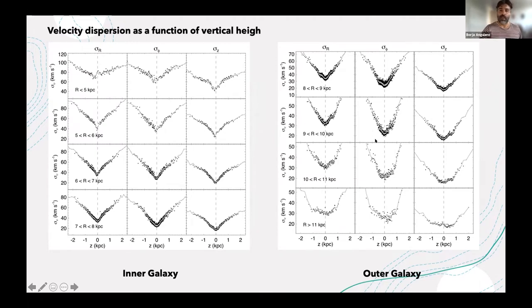They appear for a given vertical height and a given galactocentric radius. This is what the data is telling me.